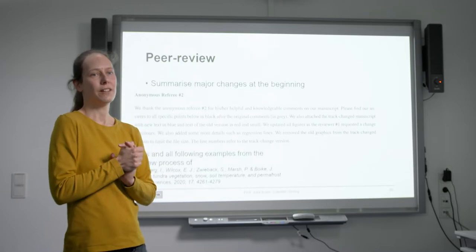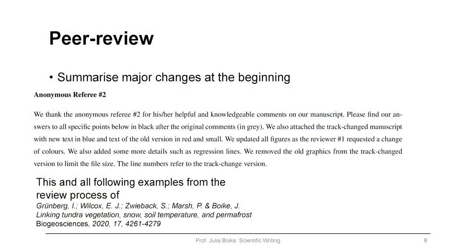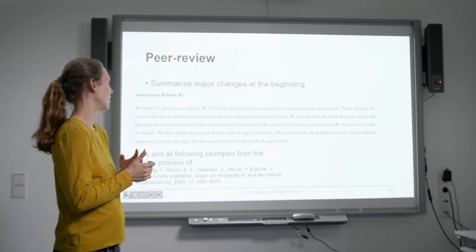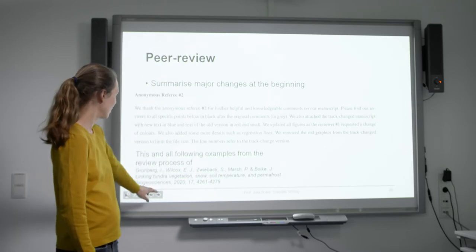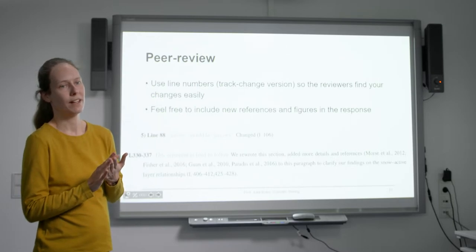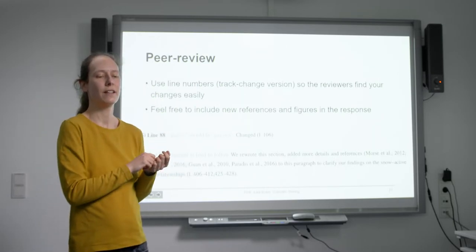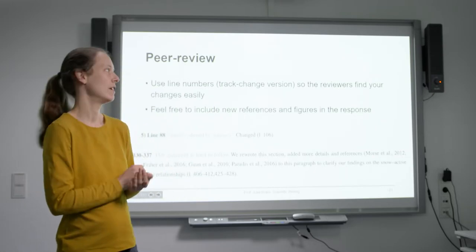In your answers to the comments, first you describe how you did your changes and you summarize major changes at the beginning, because also the reviewers - you likely get several, most often two or three - and they don't necessarily know what the other reviewer said. So you might want to highlight bigger changes to all reviewers, even though they didn't ask for it but another one did. This is one example of a header just explaining what the line numbers refer to from this paper that I published. Speaking about line numbers, it's always good to provide line numbers so the reviewer can really easily go back to the track change version and see what you changed in your paper.